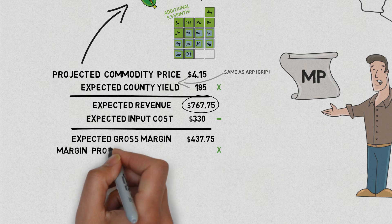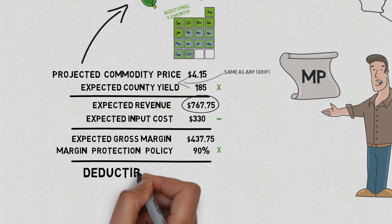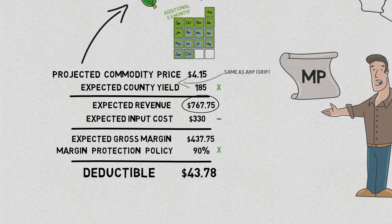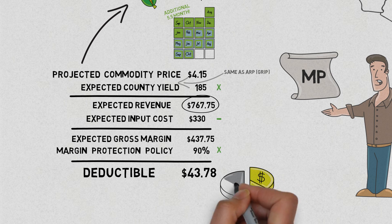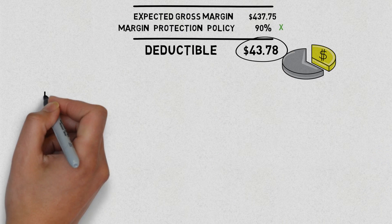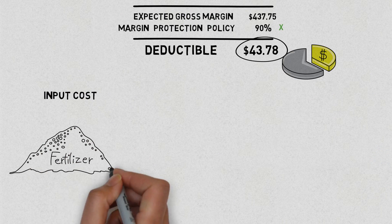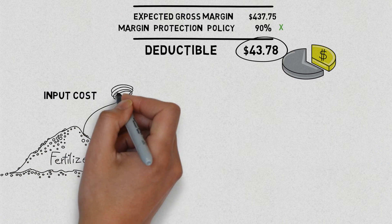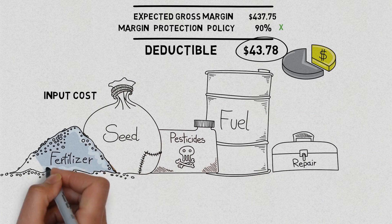Take this margin times your 90% Margin Protection policy, and you're left with a deductible of $43.78. This is one-third the deductible under RP. County yield, input cost, and price only need to fall below $43.78 to trigger this policy.